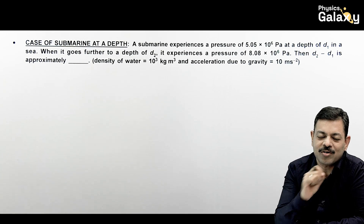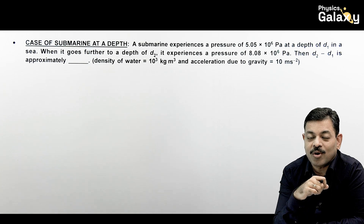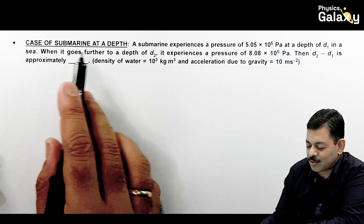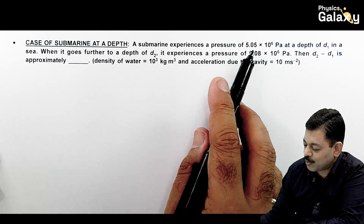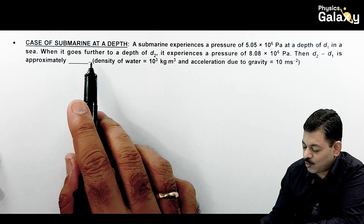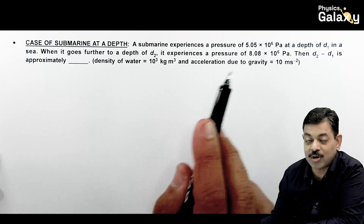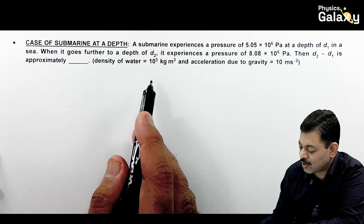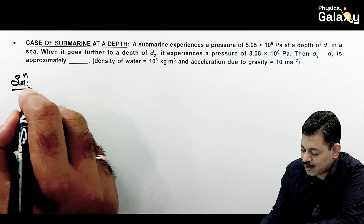Note down all applications in your EOP notebook because we will solve the relevant questions here. The case is a submarine at a given depth. The submarine experiences a pressure of 5.05 × 10⁶ Pascal at a depth d1 in the sea. When it goes further to a depth d2, the pressure is 8.08 × 10⁶ Pascal. We need to calculate d2 minus d1. Density and acceleration due to gravity are given.